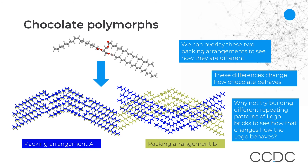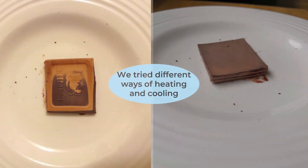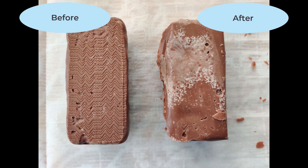If you did notice a difference in your chocolate, then you have probably made a different polymorph and the cocoa butter molecules are packed together in a different arrangement. We learnt earlier that there are at least six different ways cocoa butter molecules can arrange themselves, so you could try to heat your chocolate up or cool the chocolate down at different rates to see what happens and observe any different properties.